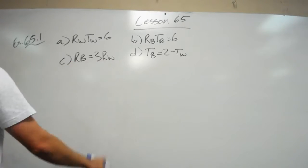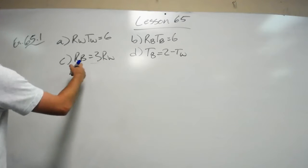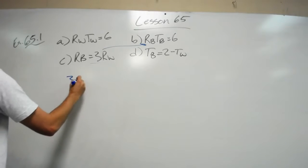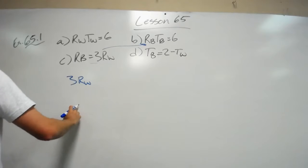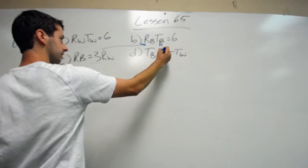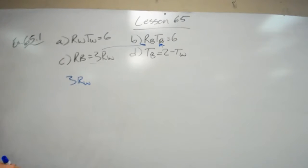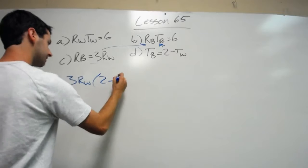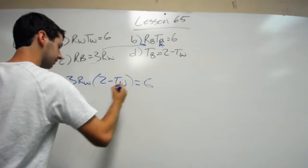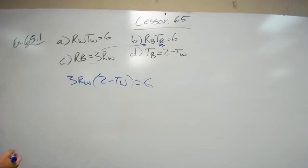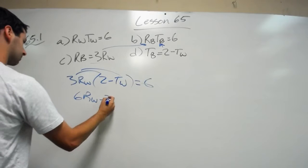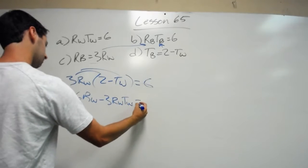If I have rb equals 3rw, then I know the value of rb. So what I can do is plug in this right here, and I get 3rw times tb equals 6. Well, fun fact, I also know what tb equals. So since I know what tb equals, I'm going to plug that in and multiply it: 2 minus tw equals 6. And now from here, I know I still have two variables, but watch what's going to happen. I multiply and distribute: 6rw minus 3rw times tw, that equals 6.